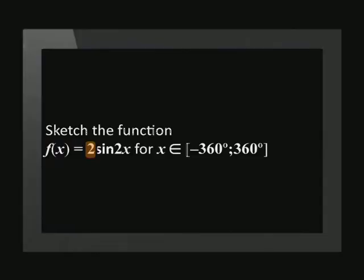Now we look at the equation to determine what changes to make. The given equation has a value of 2 for a, which means our amplitude is 2. To change the amplitude of the standard function, we multiply all the y-coordinates by 2.